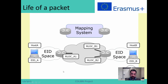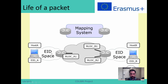I'm going to explain the life of a packet in LISP. So we have the EAD space, we have two hosts, host A and host B, which both of them have one EAD — EAD A and EAD B. And then we have two tunnel routers, two LISP routers.